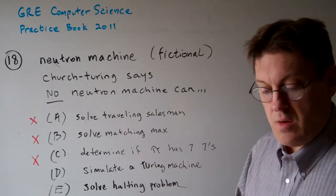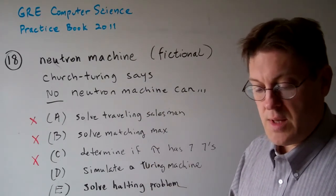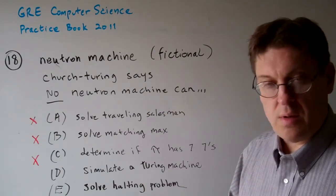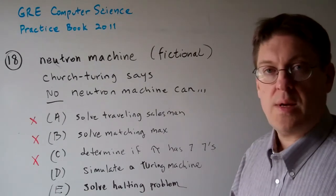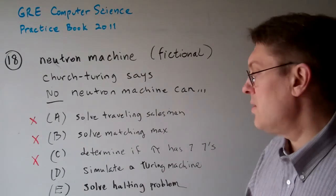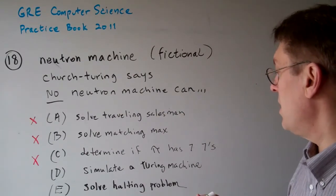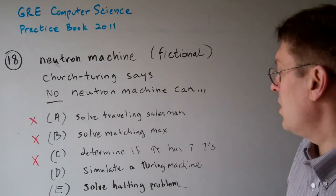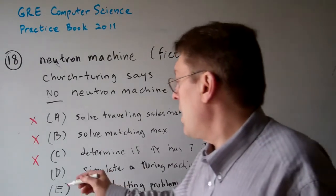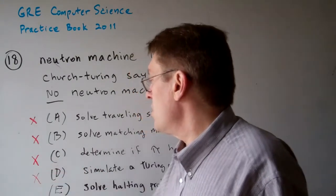Option D: No neutron machine can simulate a given Turing machine in polynomial time. Well, the Turing machine might not run in polynomial time. You can't simulate it in polynomial time. But that's not really what the Church-Turing says.